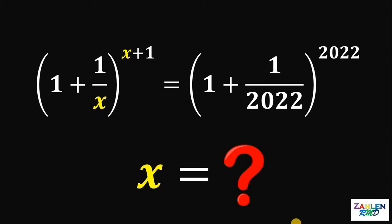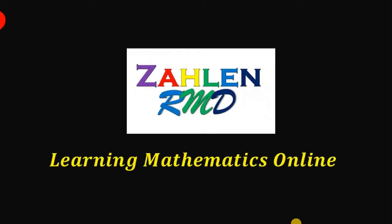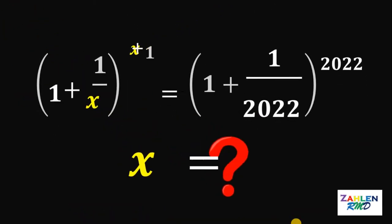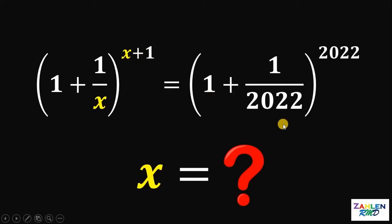Good day everyone, here's our math challenge for today. Here's our question: solve for the value of x given this equation — 1 plus 1 over x, raised to x plus 1, equals the quantity 1 plus 1 over 2022, raised to 2022.